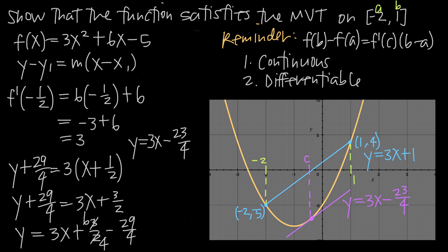Because both equations have the same slope of 3, we can say they are parallel. There exists a point c = -1/2 where the tangent line to the function is parallel to the secant line connecting the endpoints, which satisfies the mean value theorem.